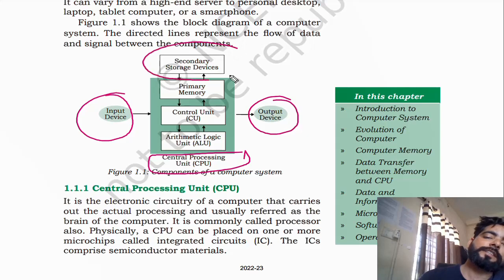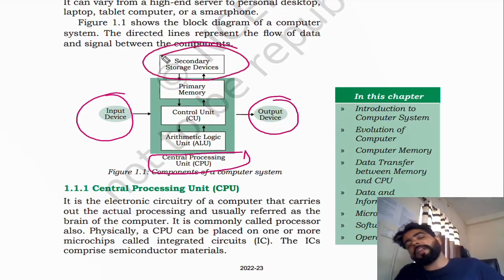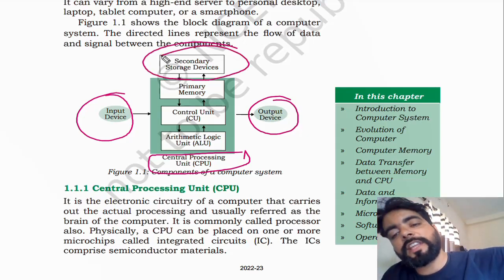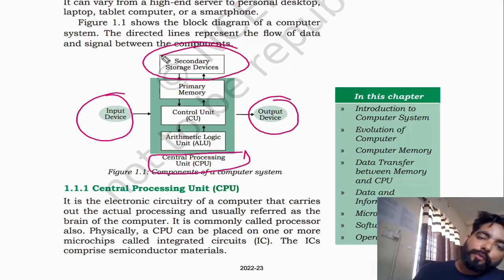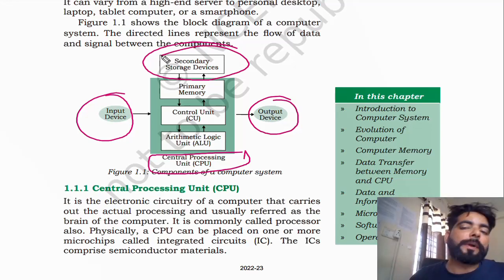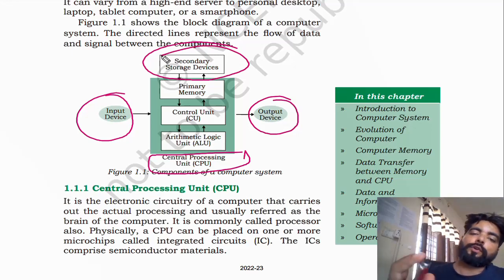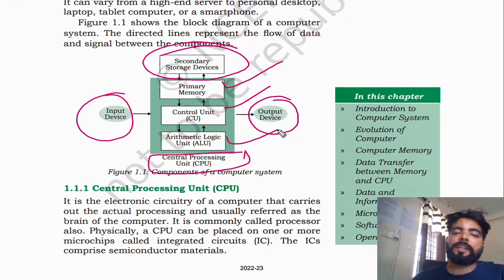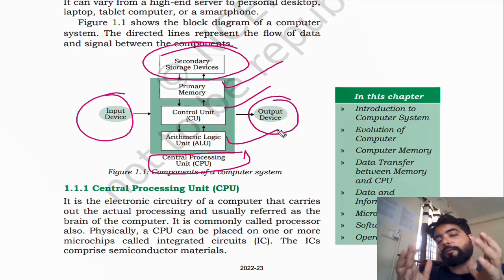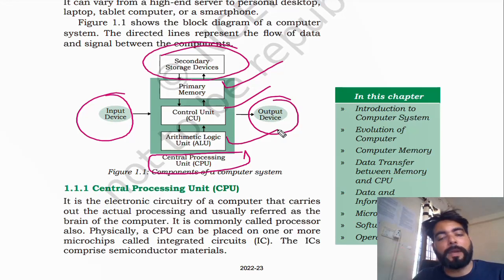We can store data in secondary storage. Now, the central processing unit again is made up of 2-3 parts: primary memory, control unit, and arithmetic logical unit. These are the 3 main parts.